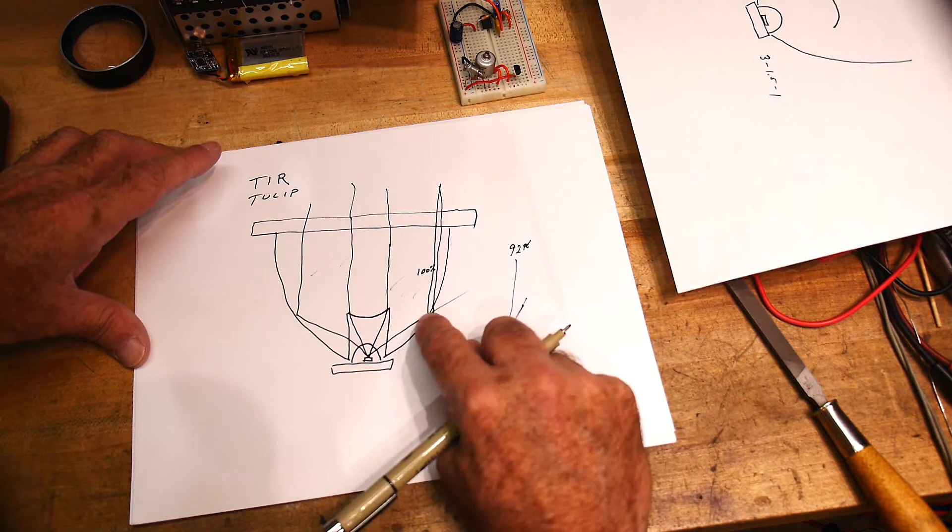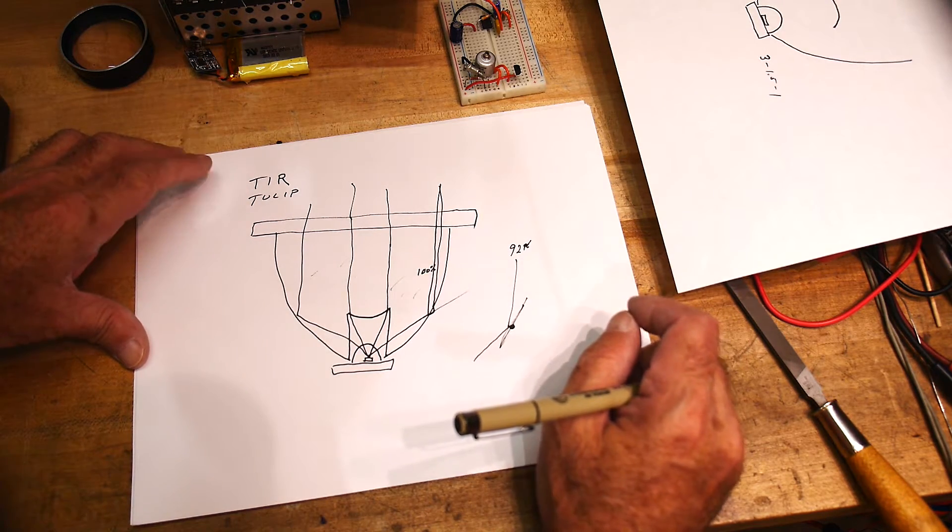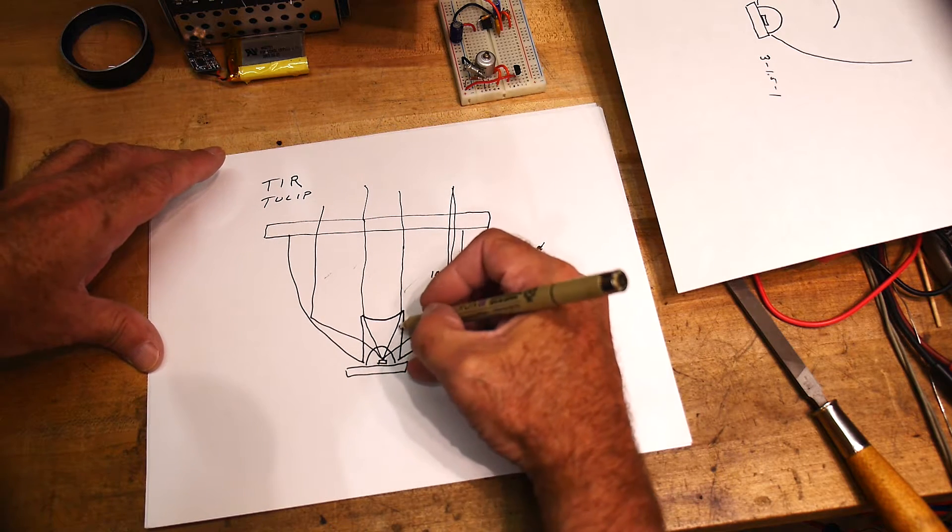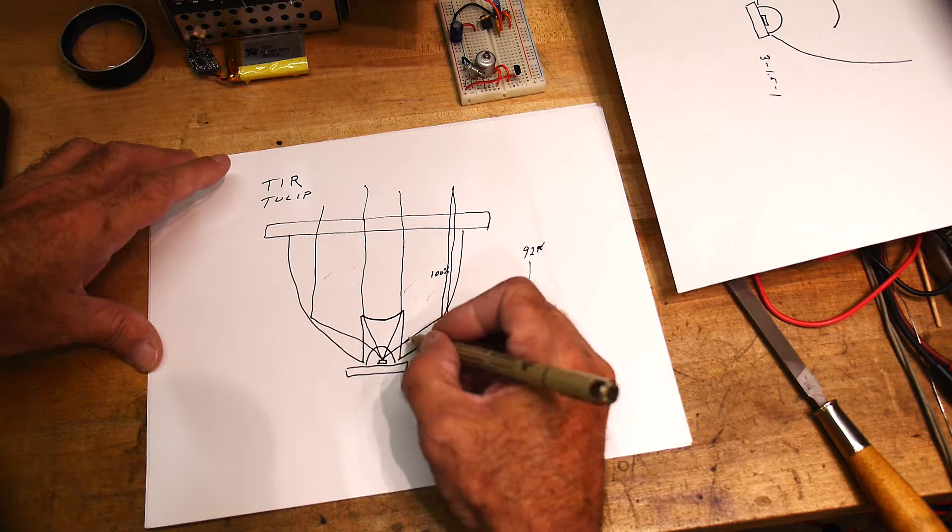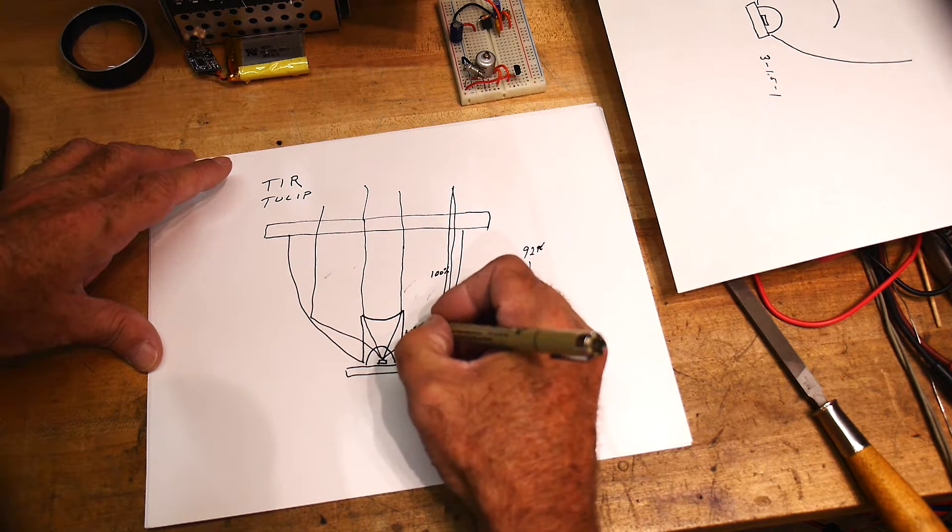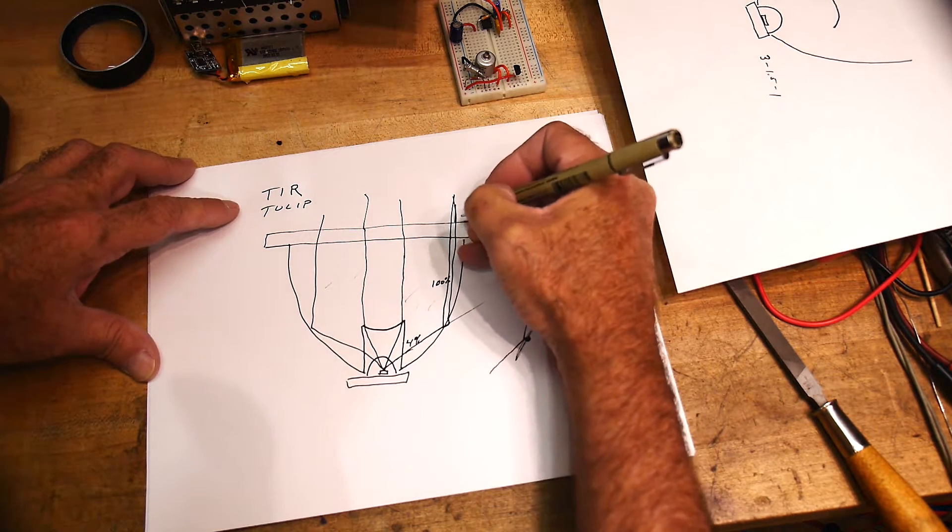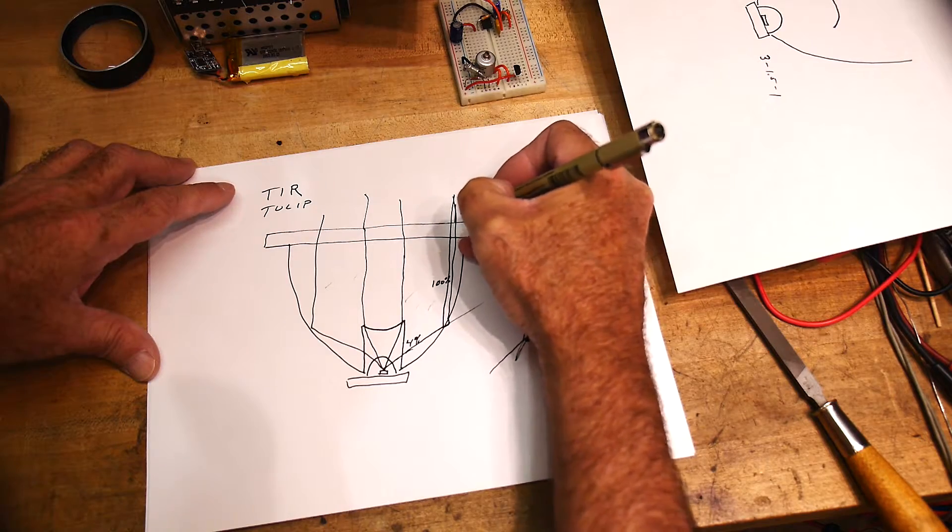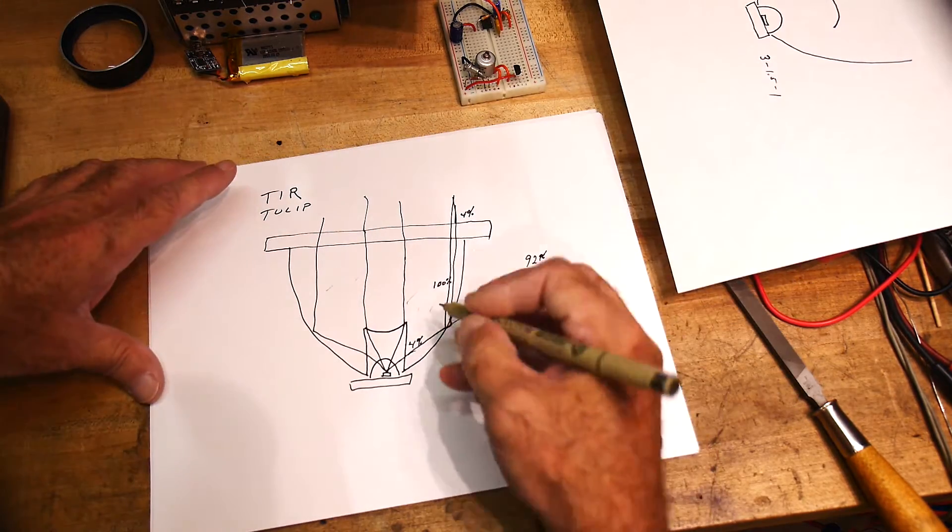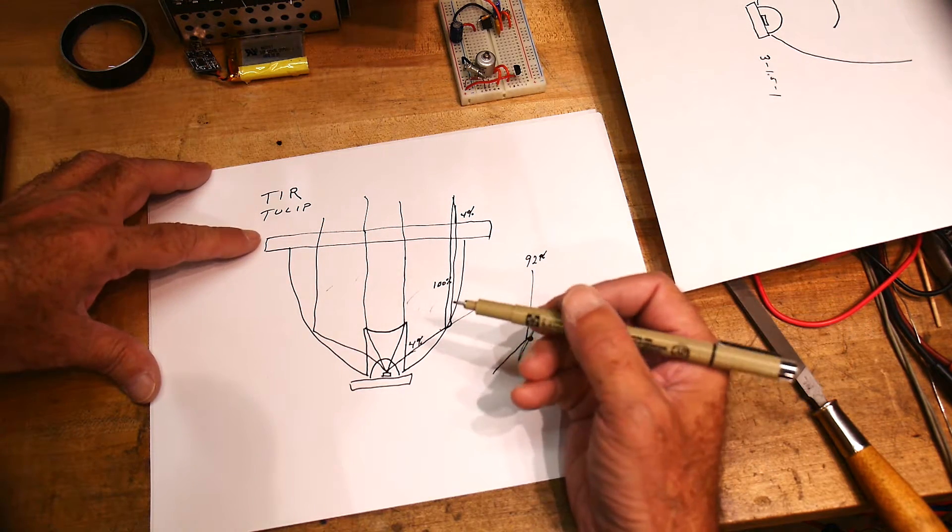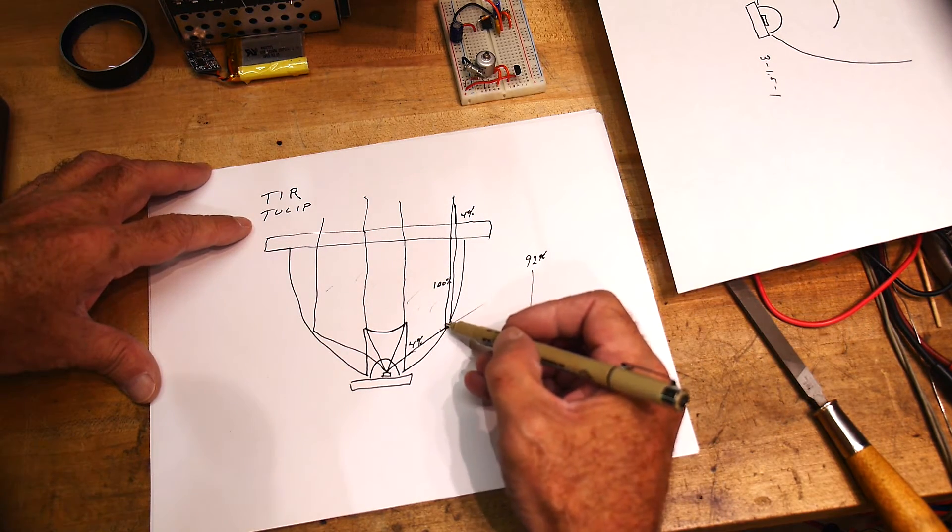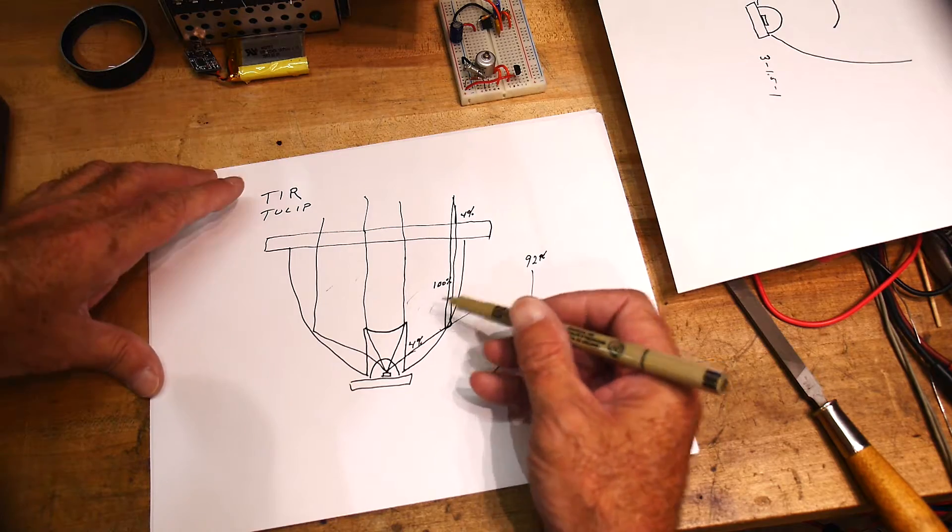Now when the light goes from here to here, you're going to lose 4%, and when the light goes from here to here, you're going to lose 4%. So it's not perfect, but you do get 100% here. So which one wins? Well, 4%, 4%, and 100%—you lose 8%. Metal, you lose 8%.